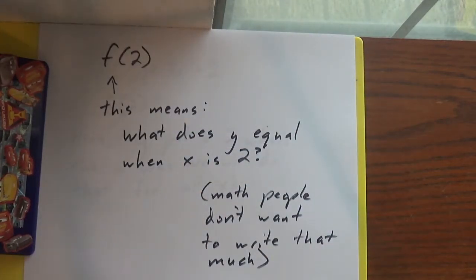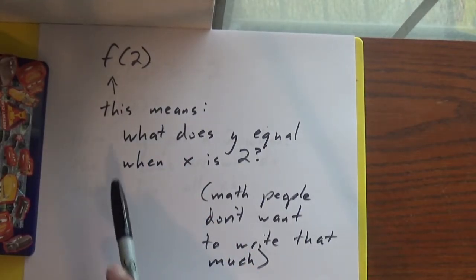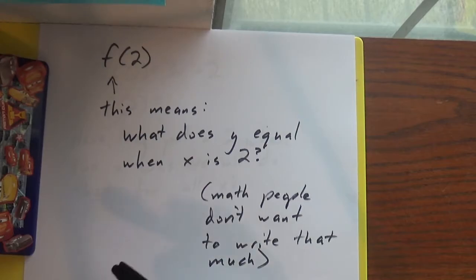Now, the other part that ends up being confusing for people is when you get this, like f(2). What does f(2) mean? Well, here's a translation for what this means. This means, what does y equal when x is 2? This is a whole lot shorter.